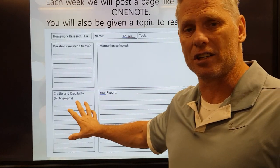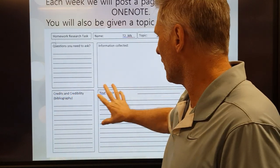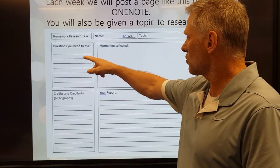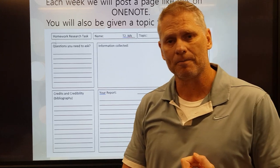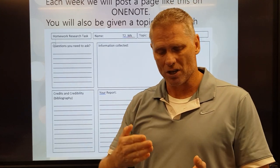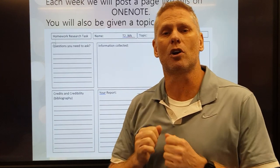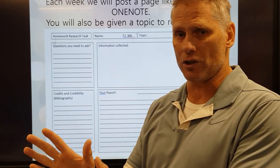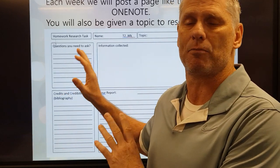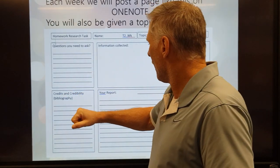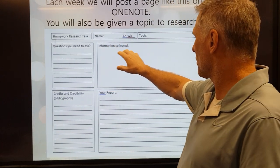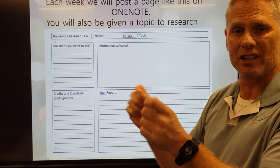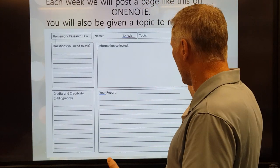There are four sections to this research sheet. The first one is posing some questions. We'll give you a topic and then you can pose three or four questions that will help guide your research. Then you'll collect information — in this box you just write the information that you collect. You don't have to put it into your own words.